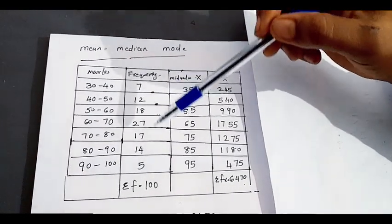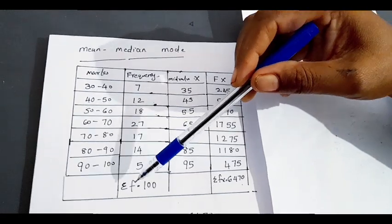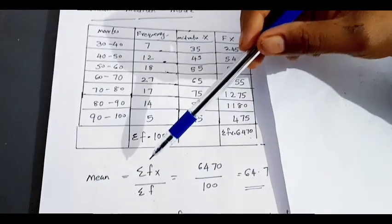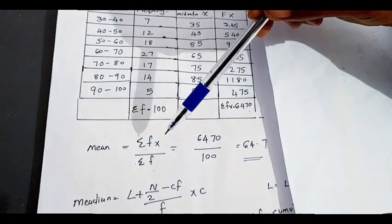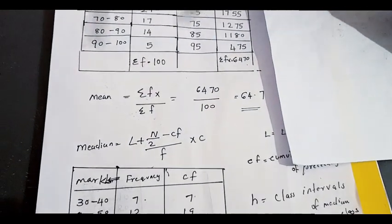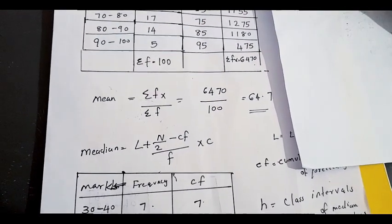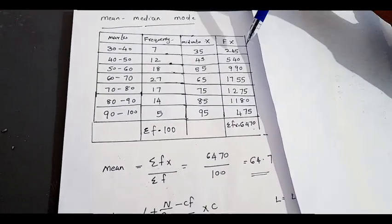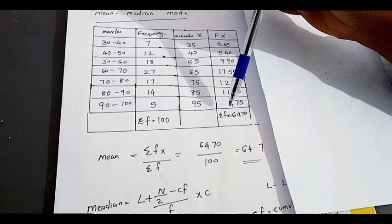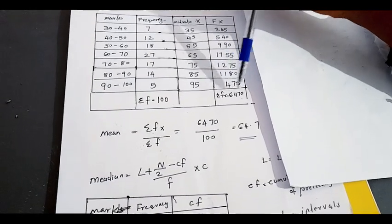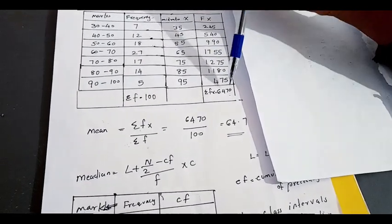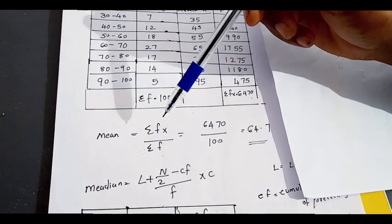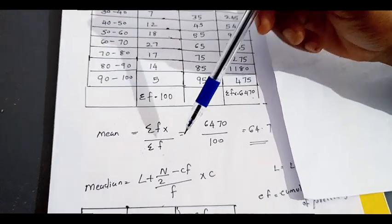This frequency is sigma f. The mean equation is sigma fx by sigma f. This is the total sigma fx, and this is the 60 shift.